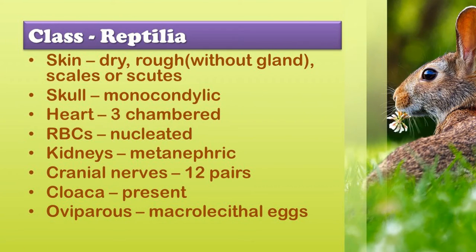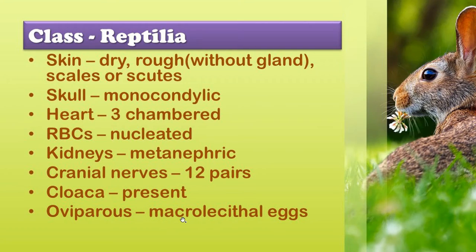Next class is Reptilia. They are creeping or crawling animals, mostly terrestrial. Their skin is dry and rough without any glands. Scales and scutes may be present, for example in crocodiles. Heart is three-chambered. Red blood cells are nucleated in Reptilia, whereas they are not nucleated in mammals. Kidneys are metanephric. Twelve pairs of cranial nerves are present. Cloaca is present, which is a common opening for the urogenital system as well as the digestive system. They are oviparous and the eggs are macrolecithal — meaning the yolk is larger than the albumin.